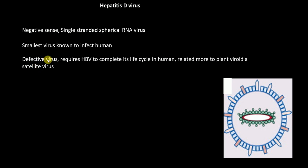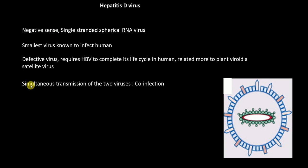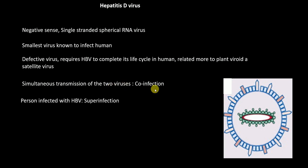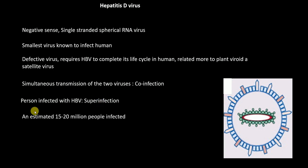It is a satellite virus — a defective virus — because it requires Hepatitis B virus to complete its life cycle in humans. If Hepatitis D virus infects together with Hepatitis B virus simultaneously, that is called co-infection. If Hepatitis D virus infects a person who has already been infected with Hepatitis B virus, that is called super-infection. An estimated 15 to 20 million people worldwide have been found to be infected with Hepatitis D virus.